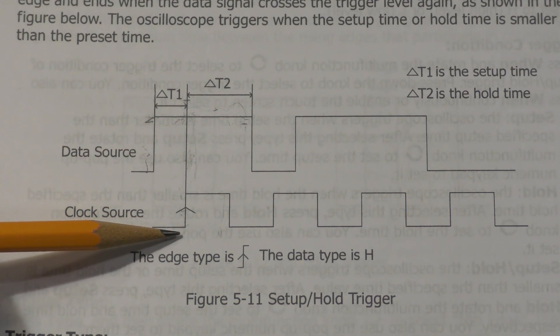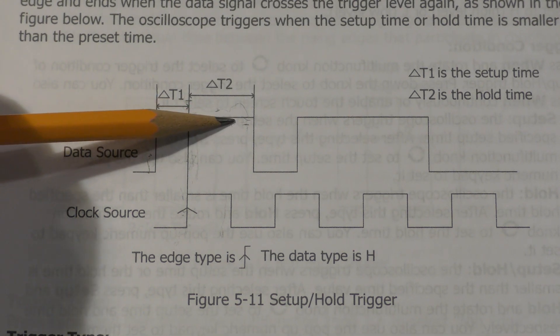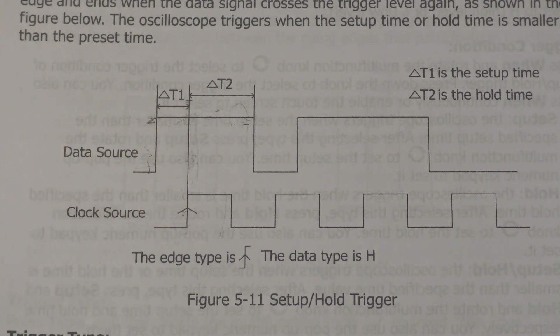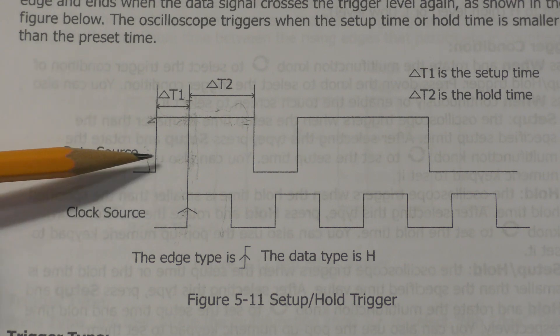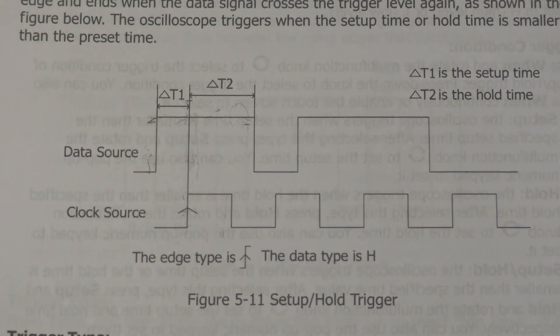They further guarantee that if you keep that signal stable for the hold time after the clock edge, it will remain in the correct state after the clock occurs. If you violate either the setup time or the hold time, then all bets are off. Basically, you're operating outside the specification by the manufacturer.